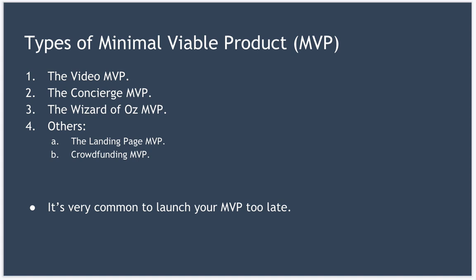Next, we have the Concierge MVP. This is based on the idea that when you're just starting out, you don't need to be able to handle thousands of customers — you just need to make one customer happy. Servicing the customer is actually done manually. That's obviously not scalable, but the point is to prove the merit of your service before you invest the money and time to build it.